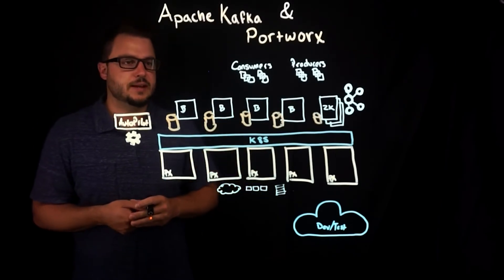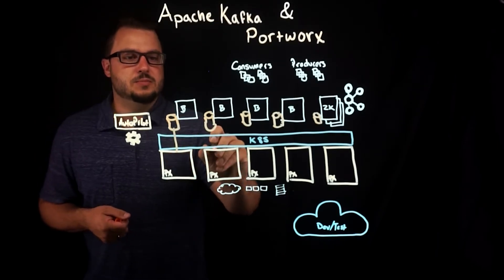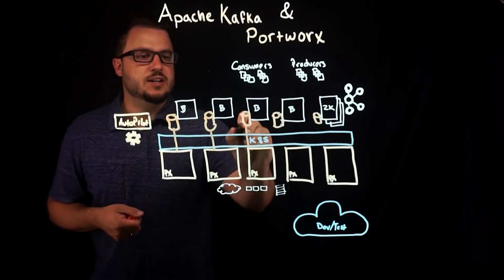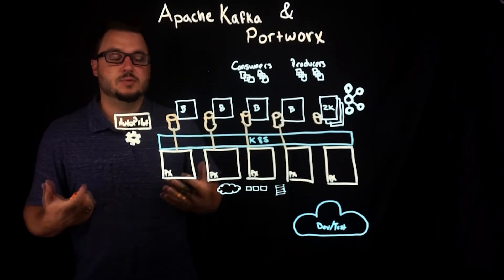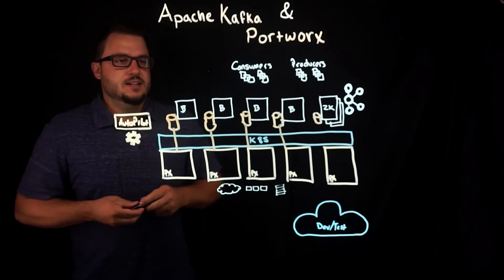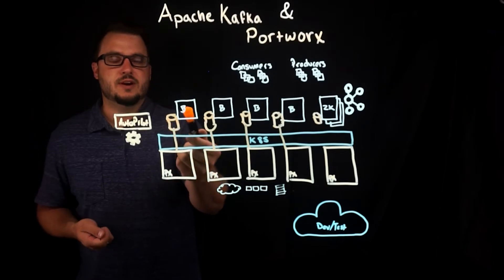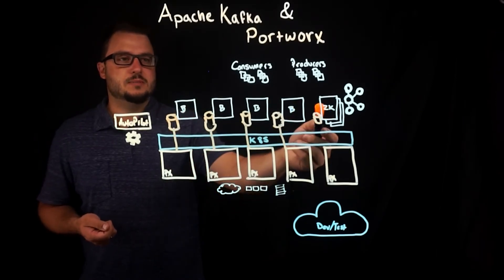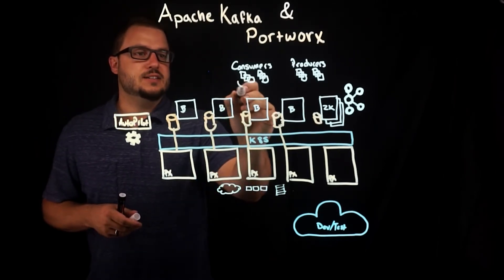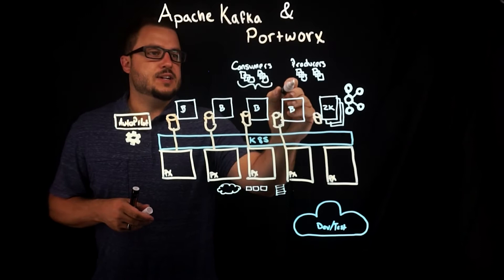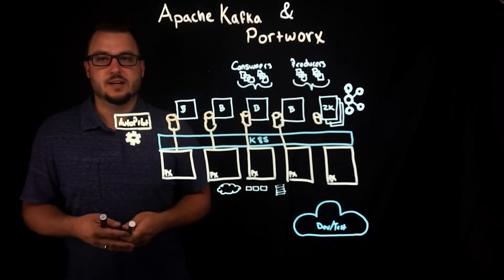We're going to focus mostly on the brokers today. These Portworx nodes will provide a globally available storage pool to create these virtual block devices out of, and the brokers can use these. At this point, you have persistent storage for every broker, and the brokers and Zookeeper set up. Now your Kafka cluster can start creating topics and performing as it would on many other deployments.